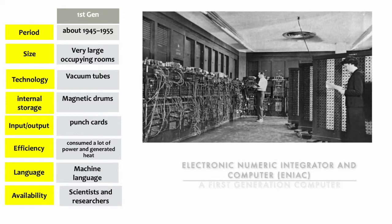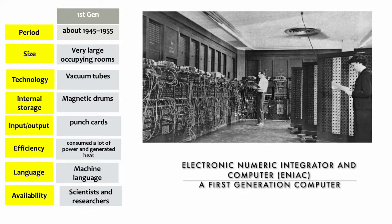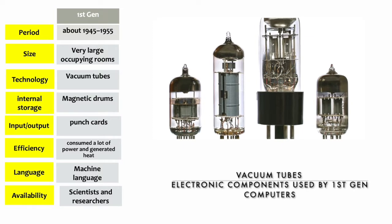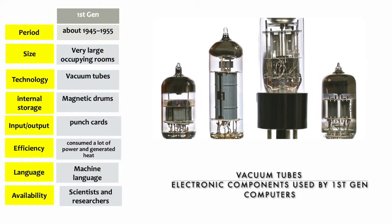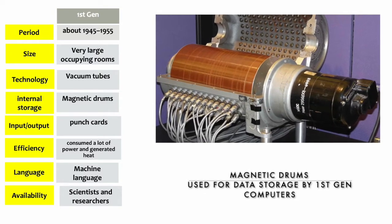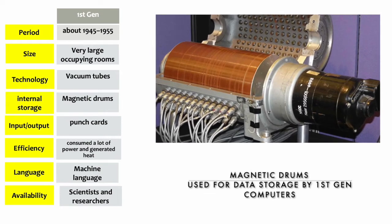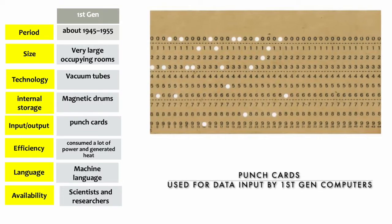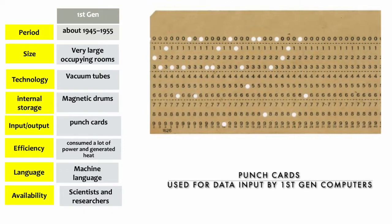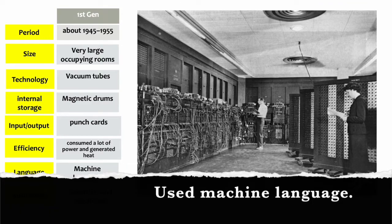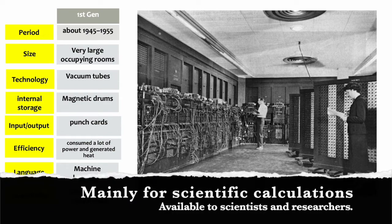The first generation computers were very large in size; they occupied whole rooms. They used vacuum tubes as the electronic components. Magnetic drums were used for internal storage. Punch cards were used to input data into the computer. They used machine language, and were mainly used for scientific calculations, available to mainly researchers and scientists.